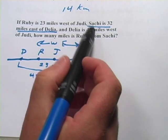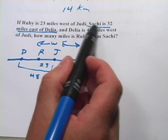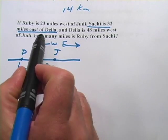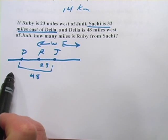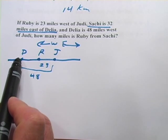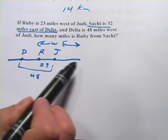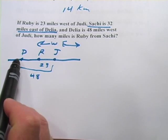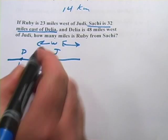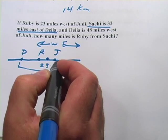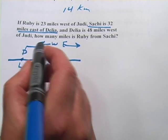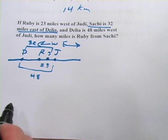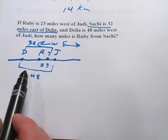Now let's go back to the second part. It says Saatchi is 32 miles east of Delia. Here's Delia, so Saatchi is going to be 32 miles east of her — somewhere in here is Saatchi, and this distance is 32. It looks a little complicated, but I think we can figure things out.